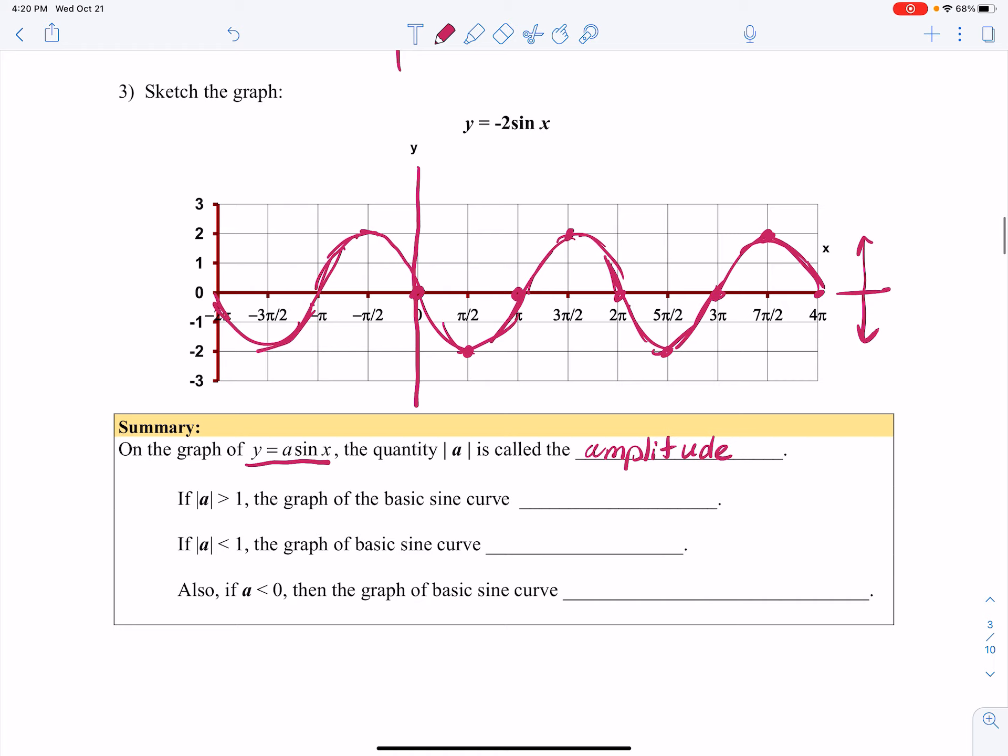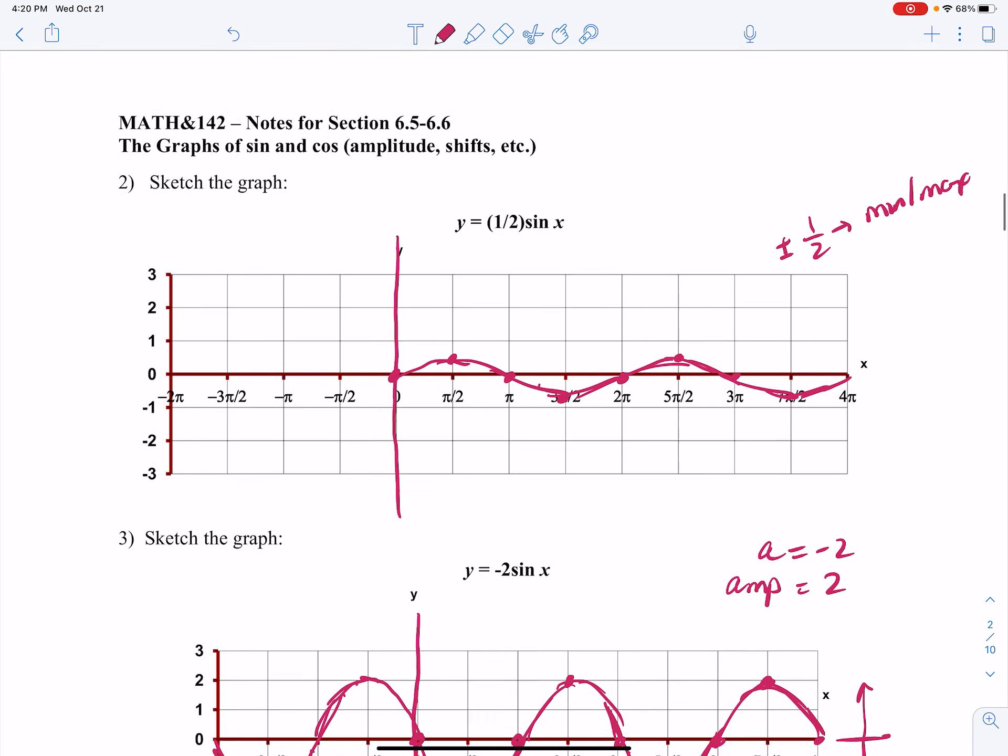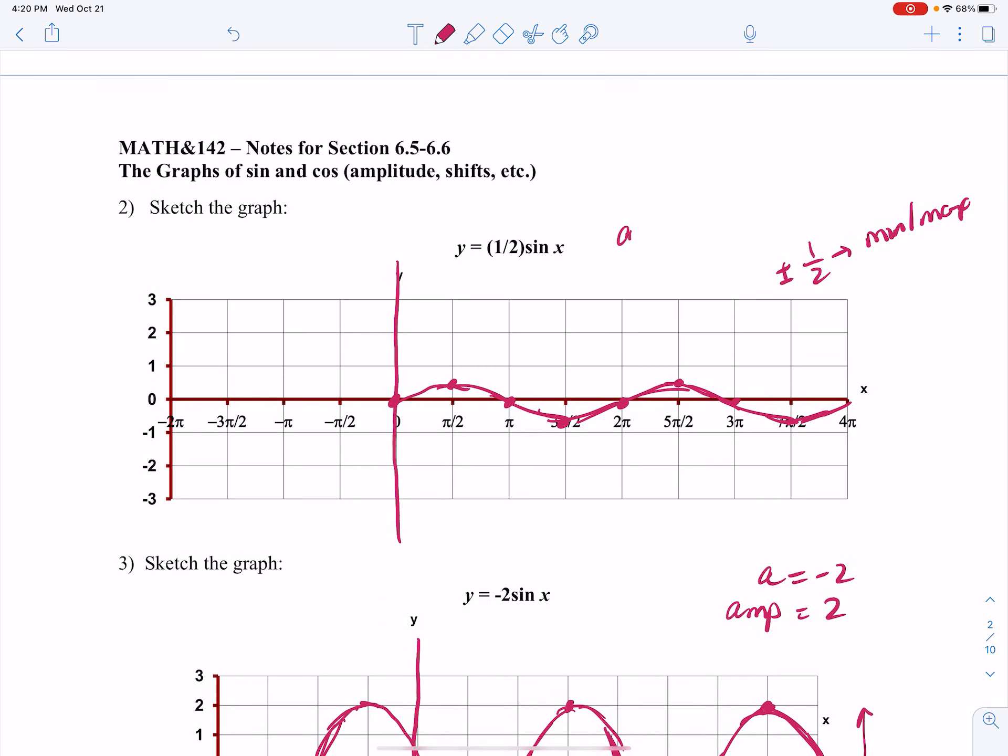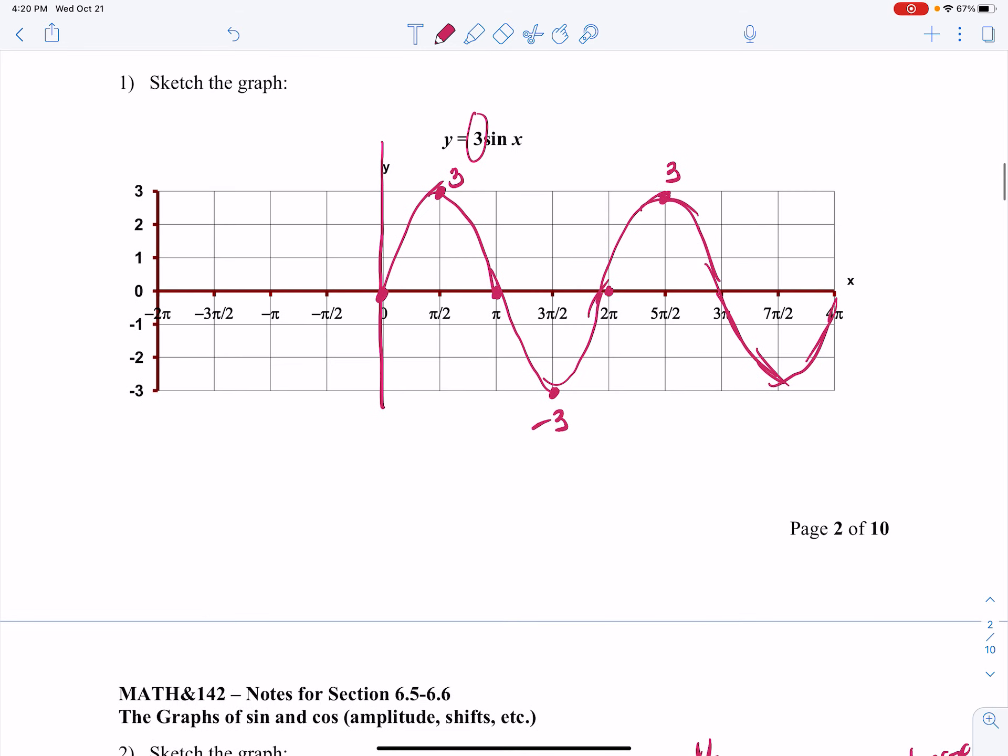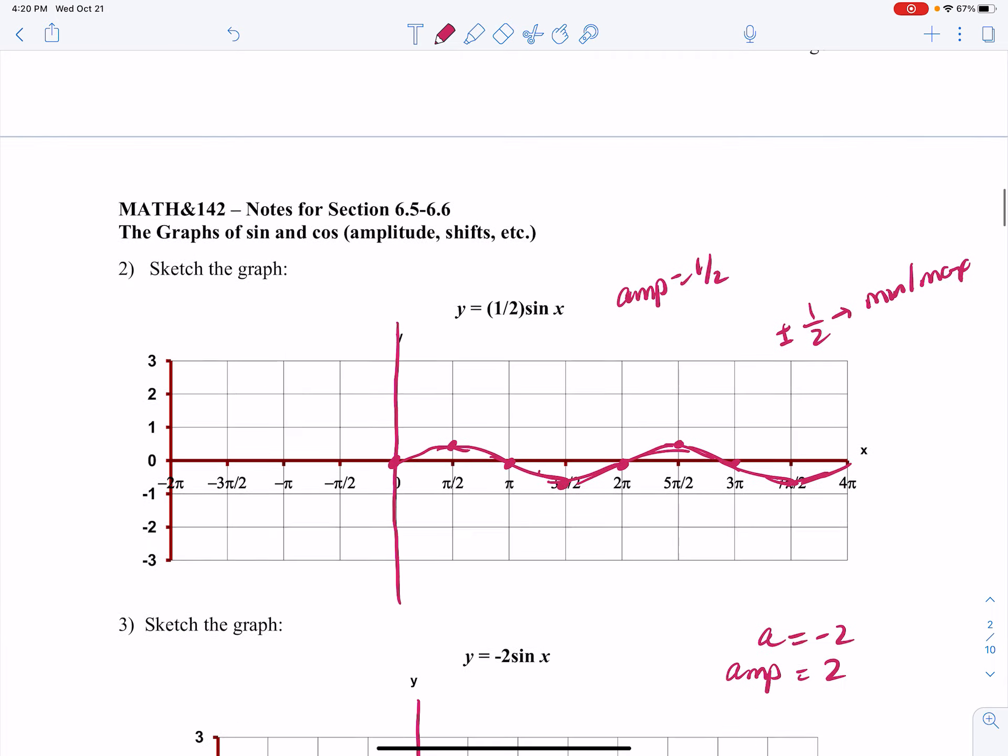So this one would have an amplitude of 2 because a is negative 2. This one up here would have an amplitude of 1 half. And this one here would have an amplitude of 3.